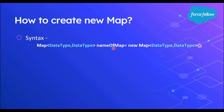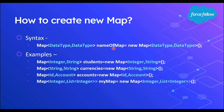Here are some examples of declaring maps with different data types. First, a student map with Integer as key and String as value. Second, a currency map storing currency code and currency name, both String. Third, an sObject example where account ID is the key and the Salesforce account record is the value. This also shows how you can use a list as a data type in a map.